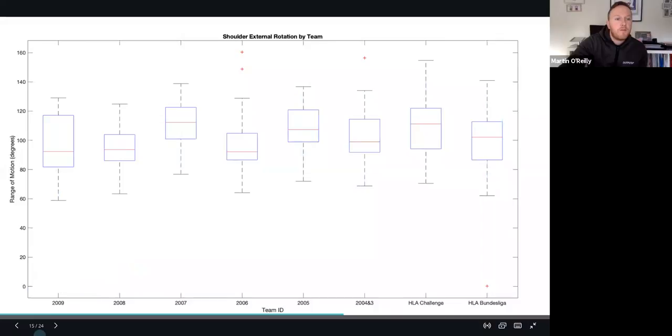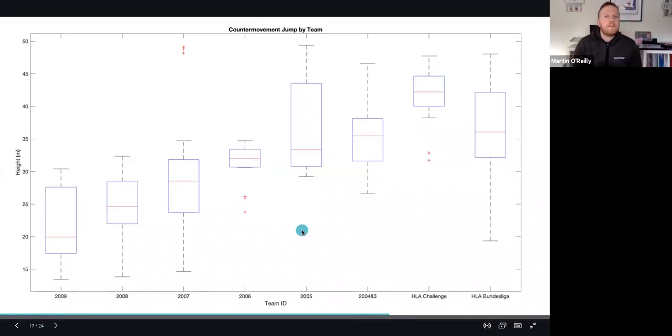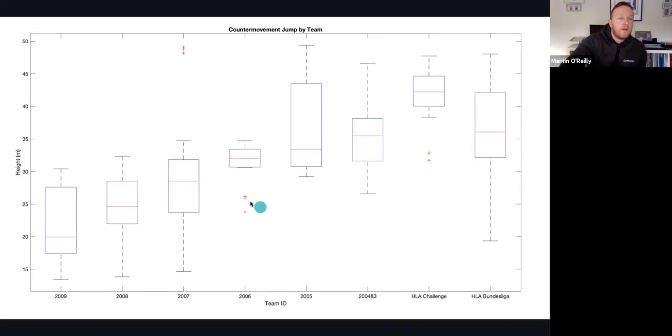Similarly in the box plot formation for the CMJs, we see a very consistent growth across the medians. There are of course outliers in many different groups with lower jump heights and sometimes with higher scores as well.